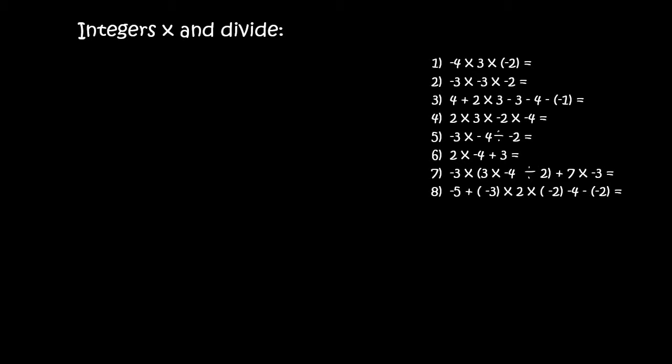Let's start with number 1. If you look at this carefully, you can see that everything is timesed together, so you can do all of it in one go. It's going to be 4 times 3, which is 12, times 2, which would give you 24. You then look at the number of negatives. There's 1 and 2. So 2 negatives is a positive, so this one is positive 24.